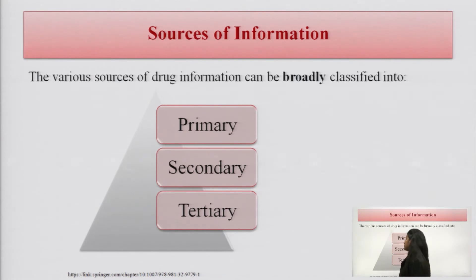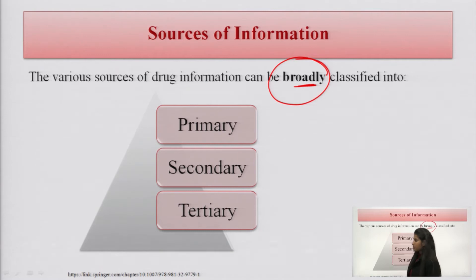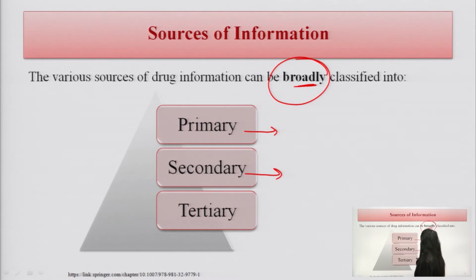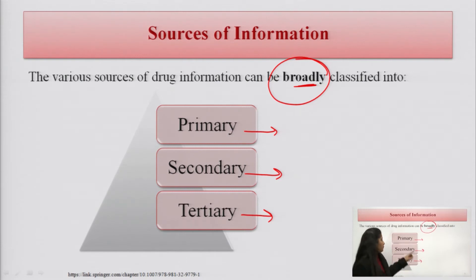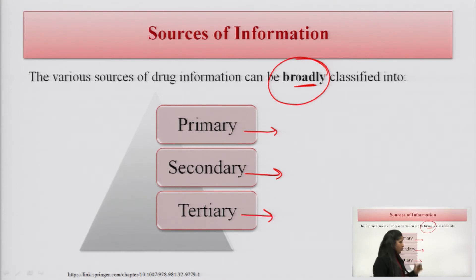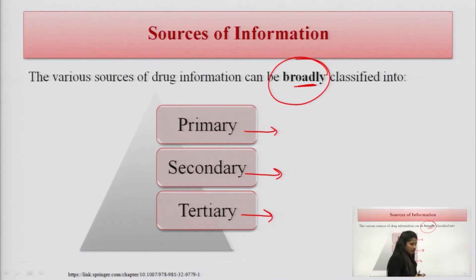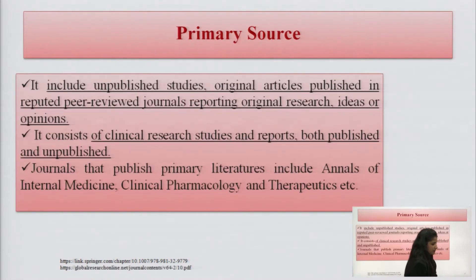On a broad basis, drug information sources are categorized into three types: primary sources, secondary sources, and tertiary sources. There are also some other types of drug information sources which we will cover.